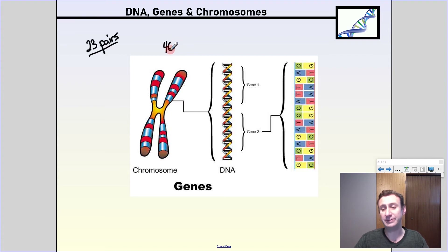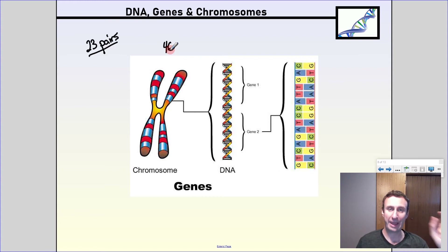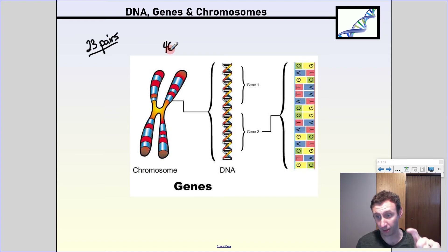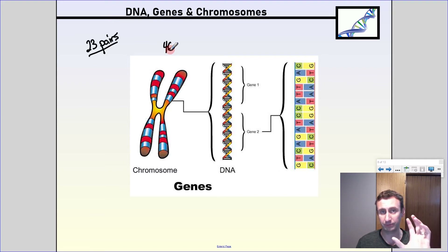This is kind of like the idea of having 23 pairs of socks — that means you have 46 socks. Now, one of each pair of chromosomes came from your dad and the other one came from your mom. So in your 46 chromosomes, 23 are from your dad and 23 are from your mom.